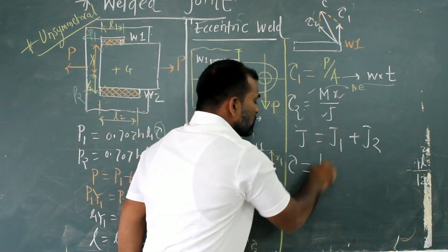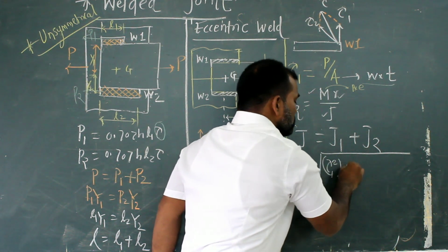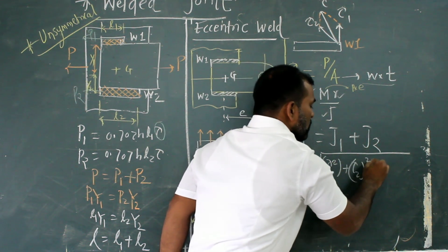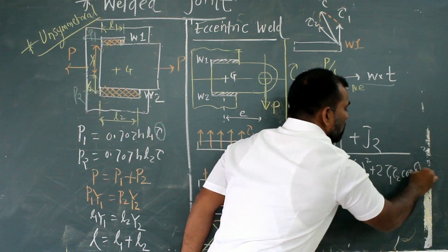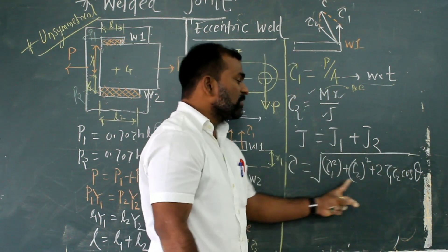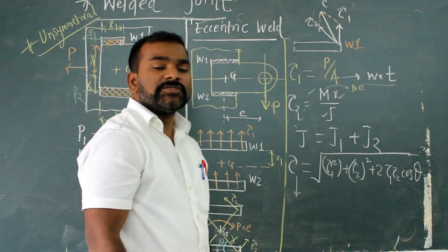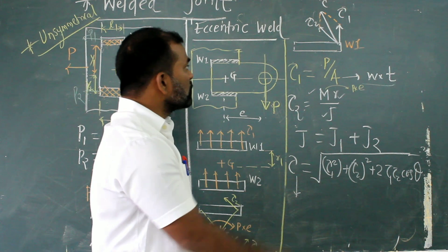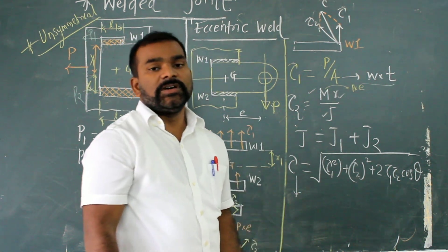So I can calculate resultant as tau is equal to square root of tau 1 squared plus tau 2 squared plus twice of tau 1 tau 2 into cos of beta. Now, this primary and secondary force in terms of this, we can calculate resultant. Once we get the result, we can say that this much force is acting on the weld, through which we can calculate the length of weld.